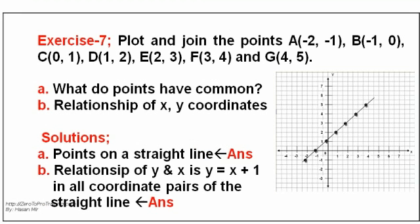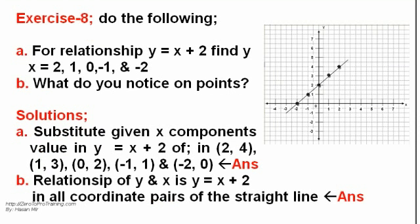Exercise 7: Plot and join 7 points in order A, B, C, D, E and G, coordinates given. A: All points are straight line. B: Relationship of coordinates Y equals X plus 1. Exercise 8: Perform A. Find Y by Y equals X plus 2 of X: 2, 1, 0, -1, and 0 are 4, 3, 2, 1 and 0 respectively. B: Relationship Y equals X plus 2.